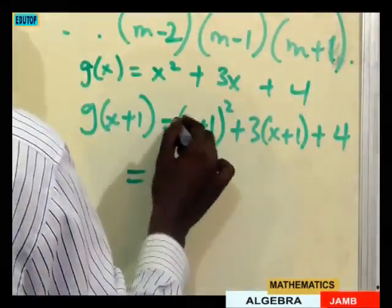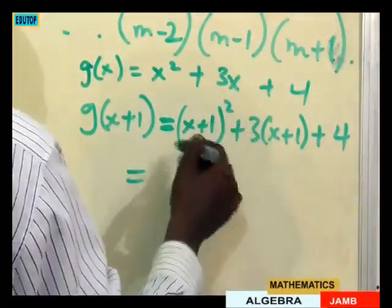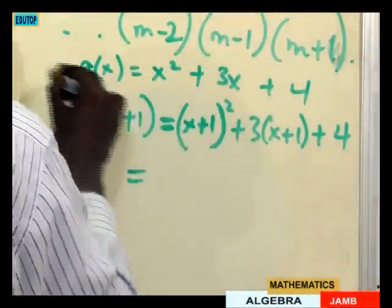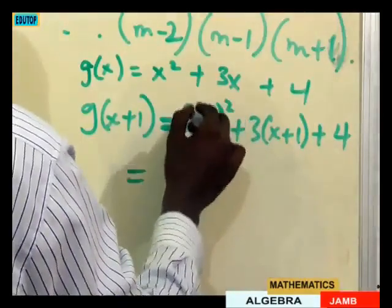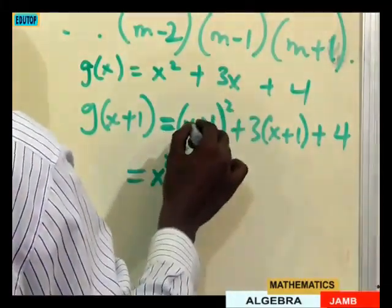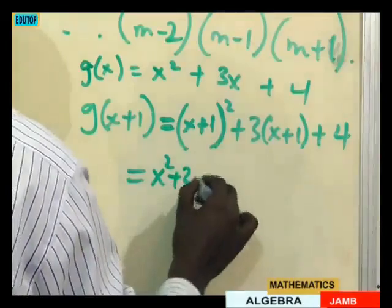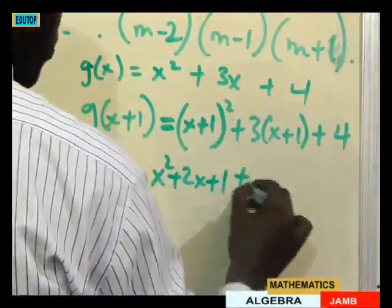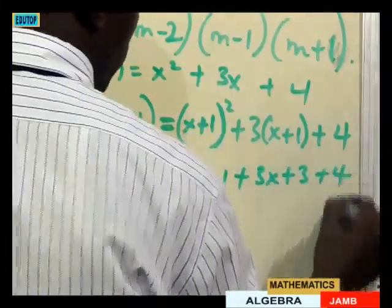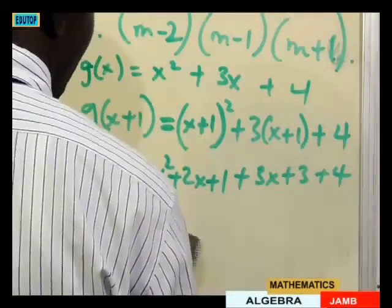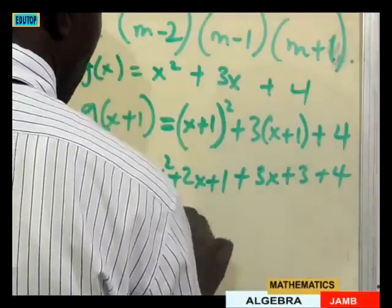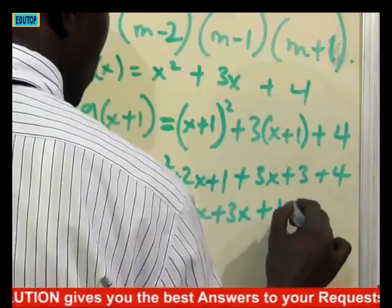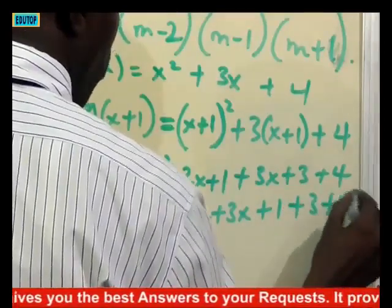Expanding x plus 1 all squared gives x squared plus 2x plus 1. So we have x squared plus 2x plus 1 plus 3x plus 3 plus 4. Collecting like terms: x squared, then 2x plus 3x gives 5x, then 1 plus 3 plus 4 gives 8. So g of x plus 1 equals x squared plus 5x plus 8.